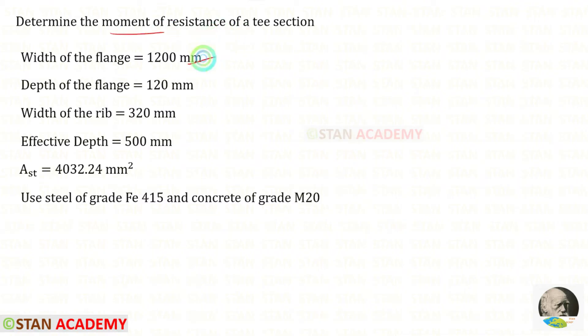Width of the flange is given. Depth of the flange is given. Width of the rib is given. Effective depth is given. AST is given. FCK is given and FY is given.